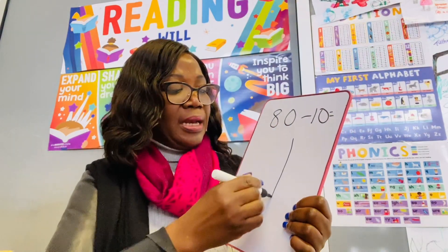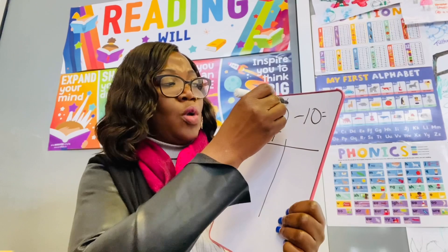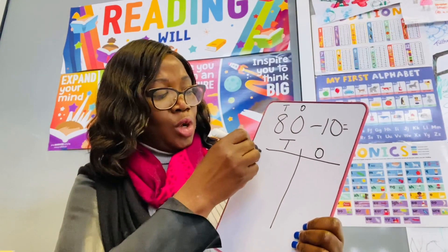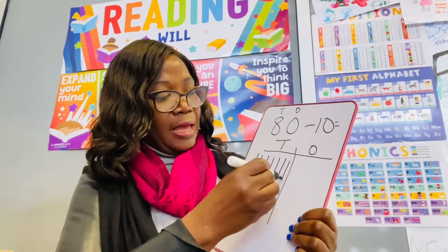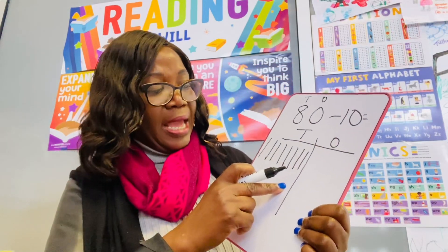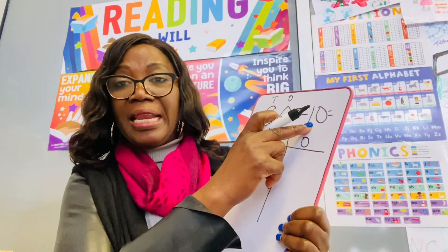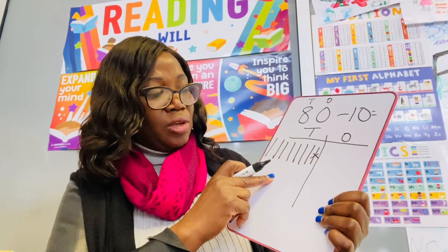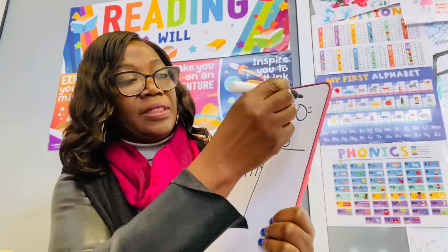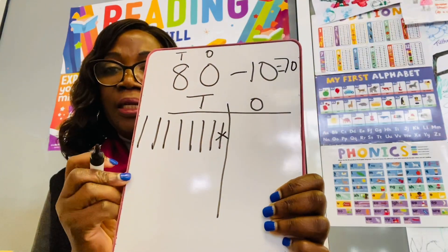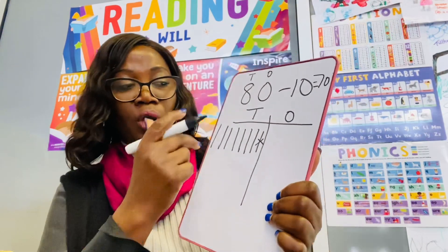But if you don't know, we draw a grid like this. We have our 10s and our 1s. So we draw 8 tens: 1, 2, 3, 4, 5, 6, 7, 8 — that makes 8 tens, which is 10, 20, 30, 40, 50, 60, 70, 80. So you are taking 10 away, so you just cross out one 10. How many do you have left? 10, 20, 30, 40, 50, 60, 70. So you have 70 left. You understand — you take 10 away from 80 and you have 70 left. Draw your grid like this and watch this video over and over again until you understand.